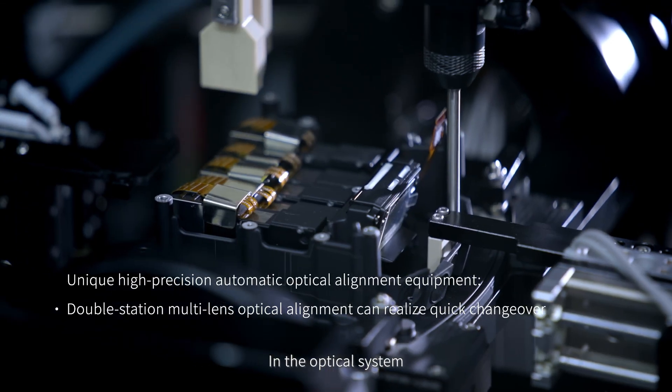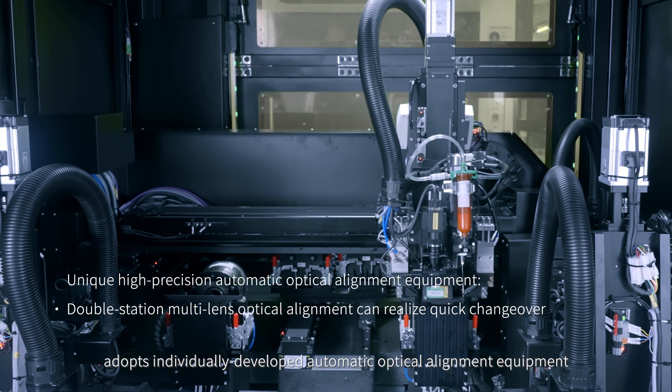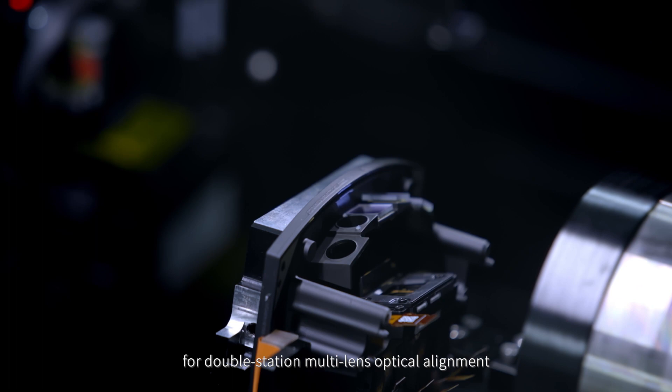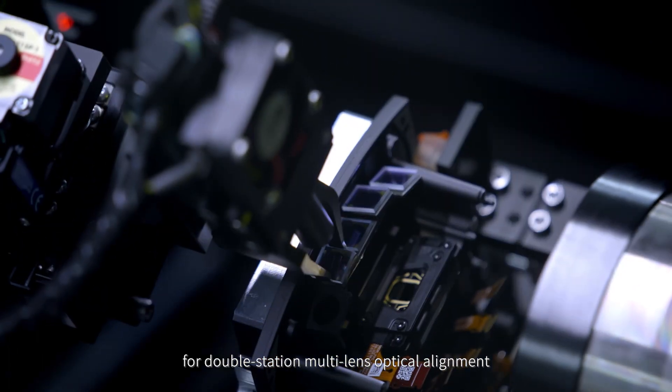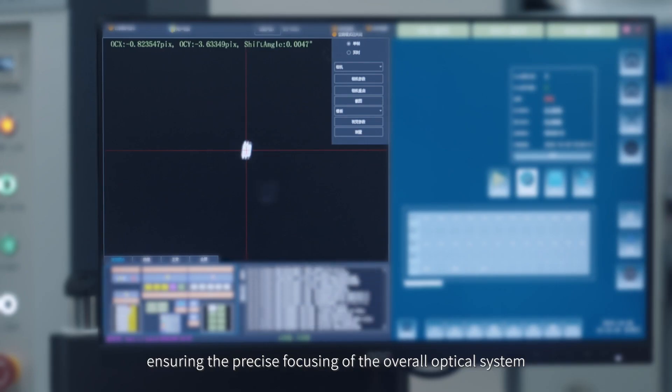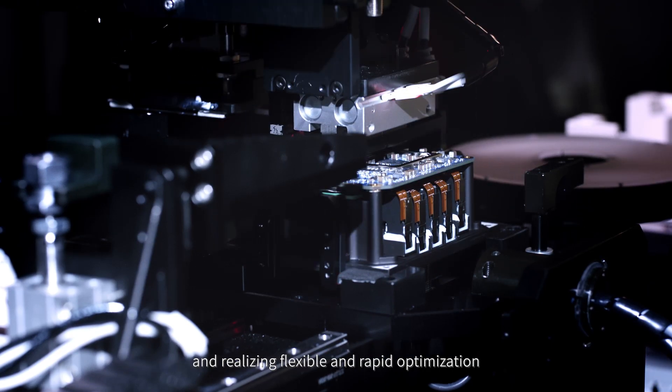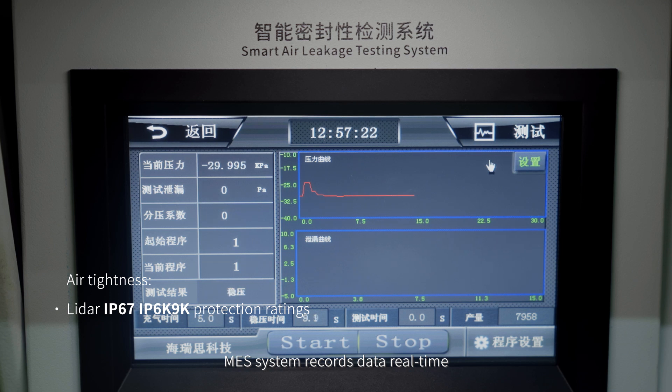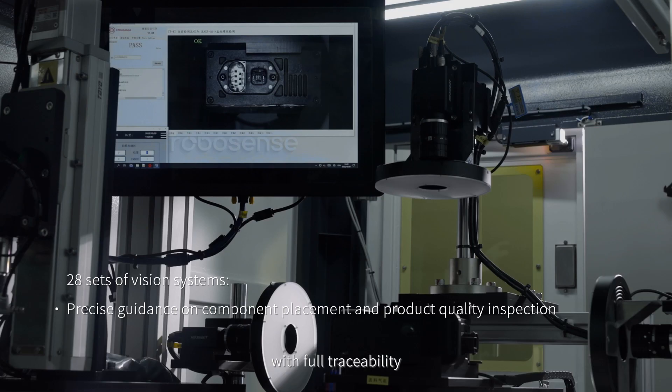In the optical system, the final assembly production line adopts individually developed automatic optical alignment equipment for double station multi-lens optical alignment, ensuring the precise focusing of the overall optical system and realizing flexible and rapid optimization. MES system records data real-time with full traceability.